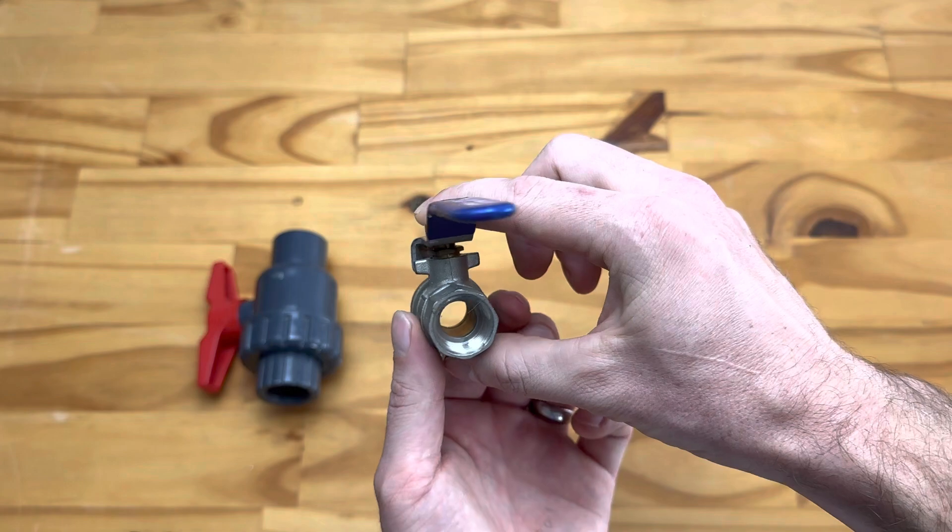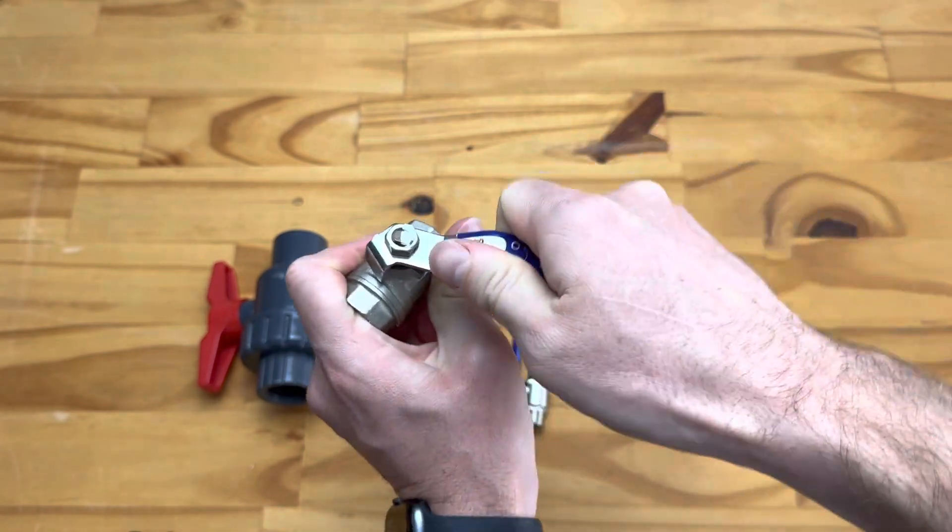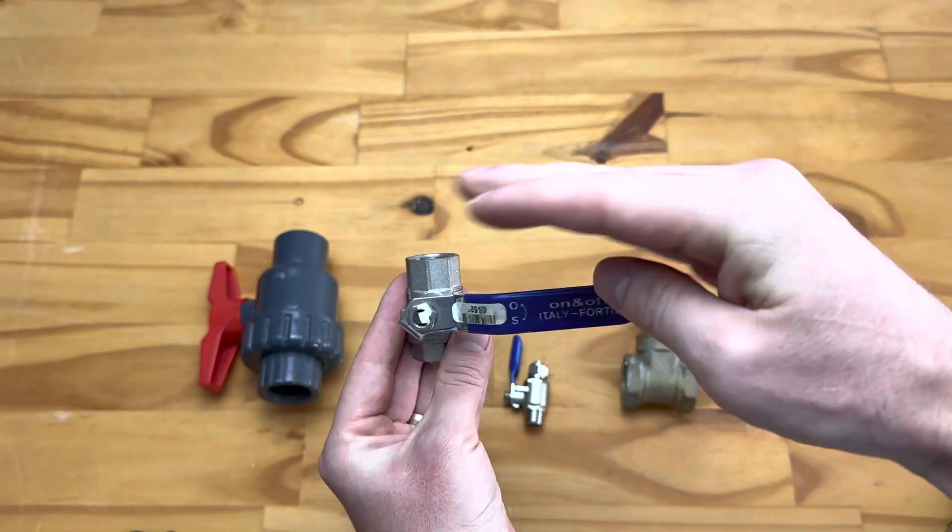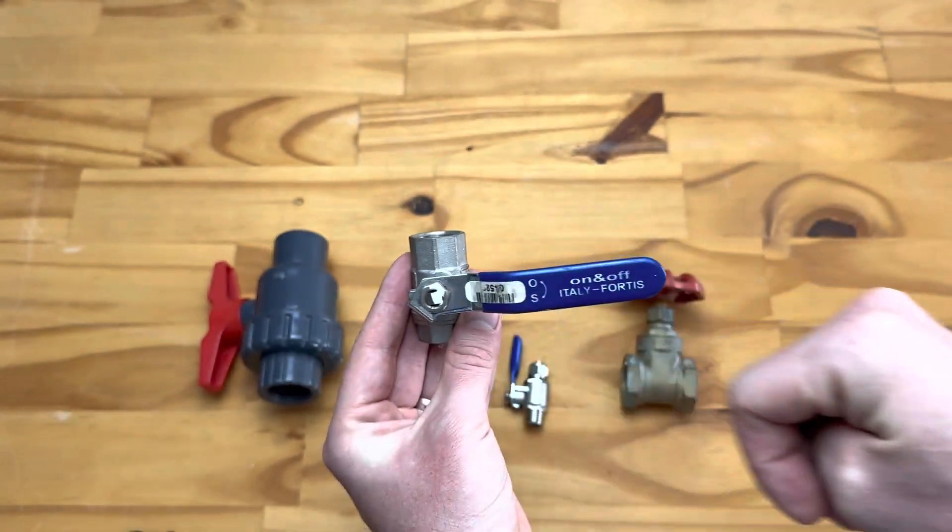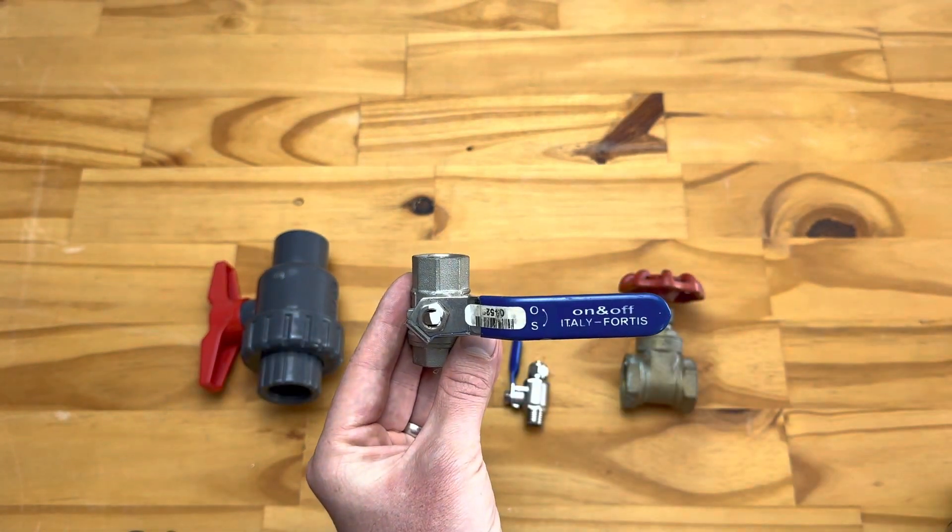You can see there the hole all the way through, and when you turn it you turn it 90 degrees just like that and it will then close. So if your handle is going across your pipe, you can imagine it's blocking the water off and the water will stop flowing.